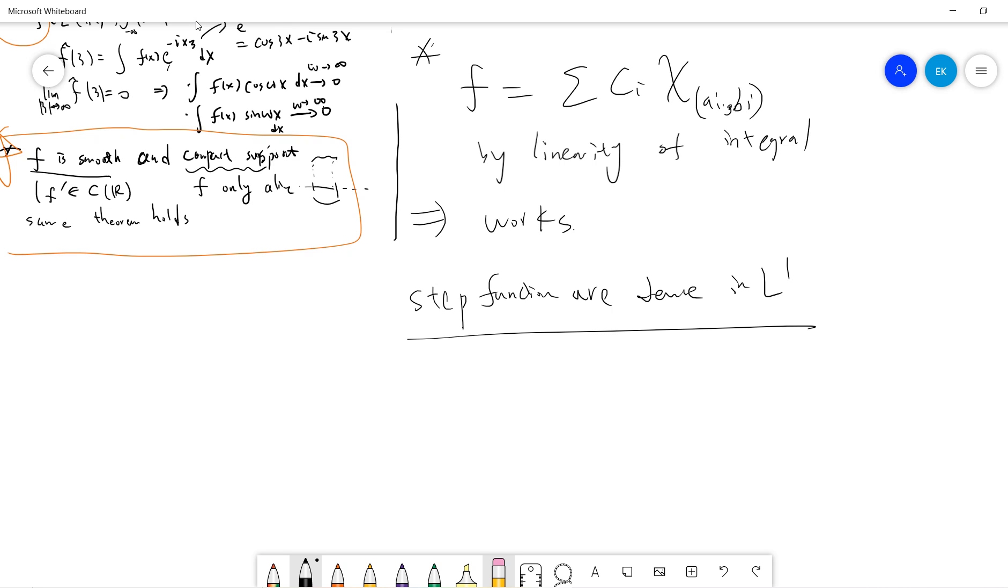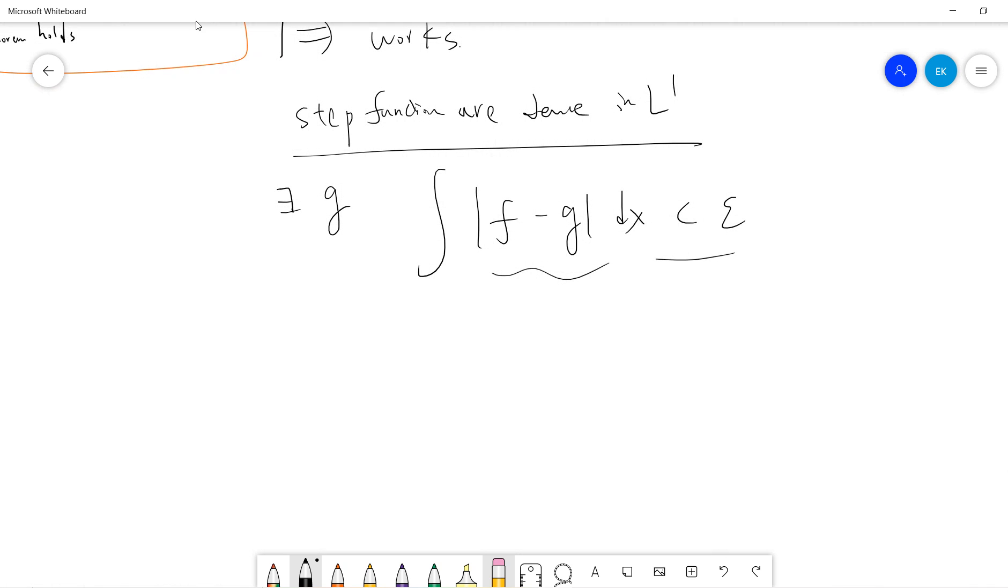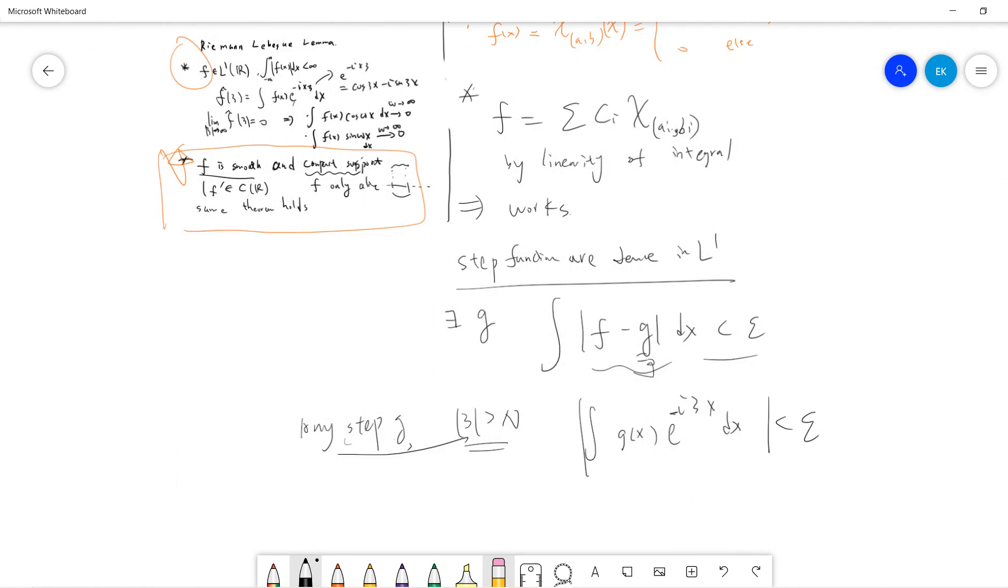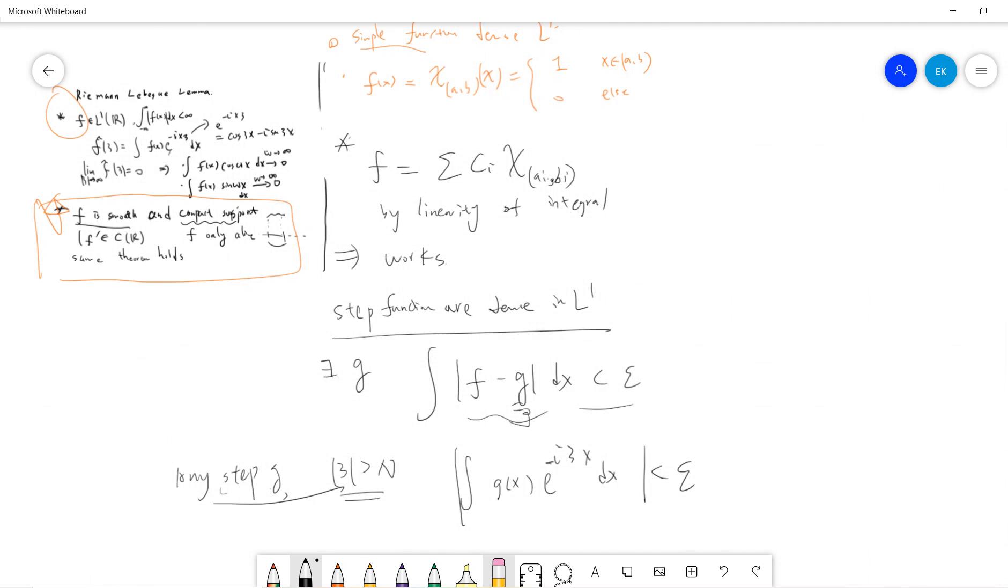So the idea is that there's a step function g, such that integral f minus g dx is less than epsilon. And we know that this theorem works for all the step functions. So that means you can find, given any step function g, you can find a large n such that when per c is very large, then you get this. And the reason is just the definition of the limit. Because we know that if f is a step function, then everything works.